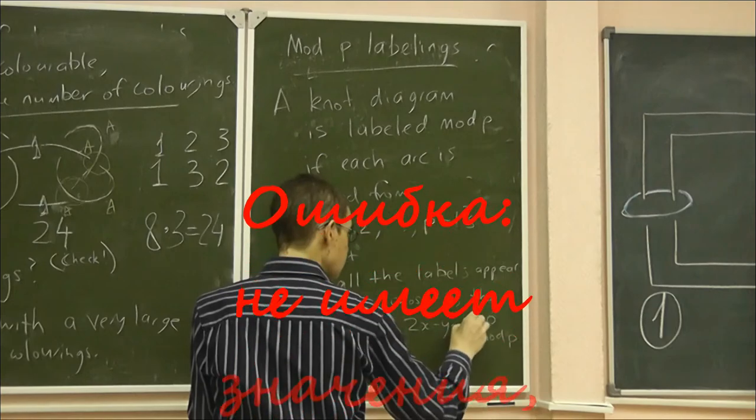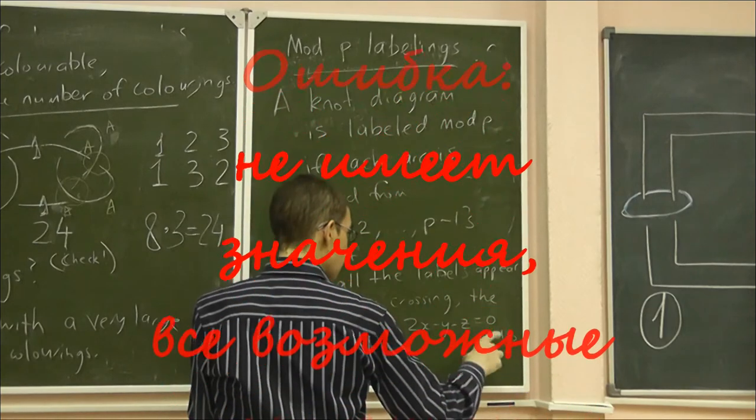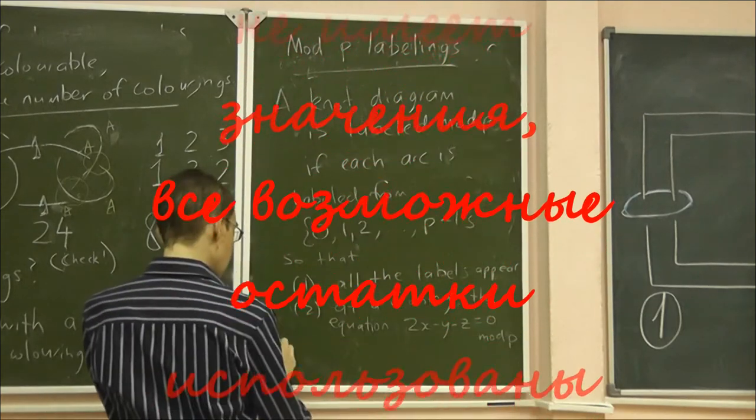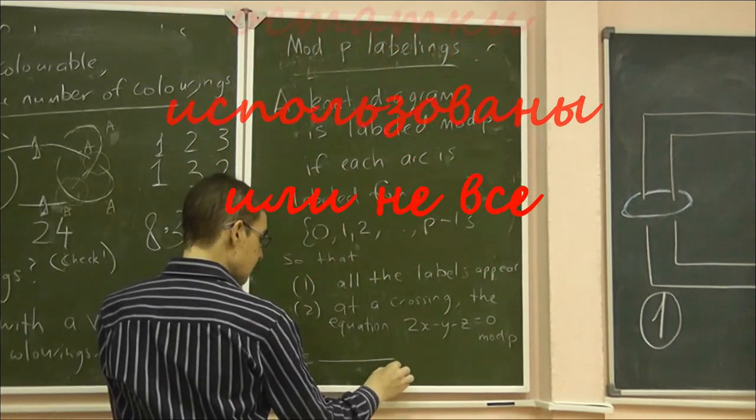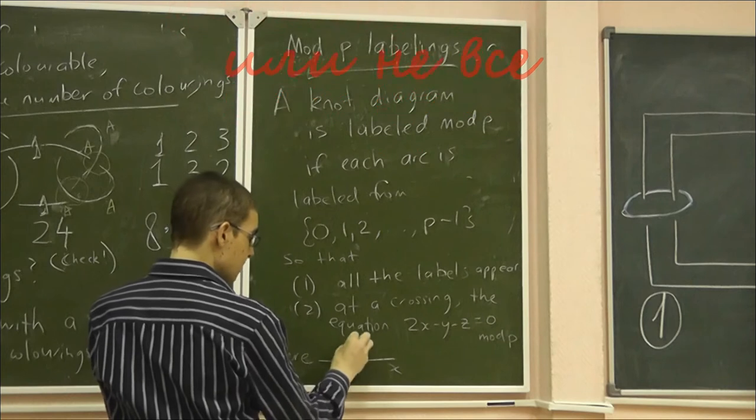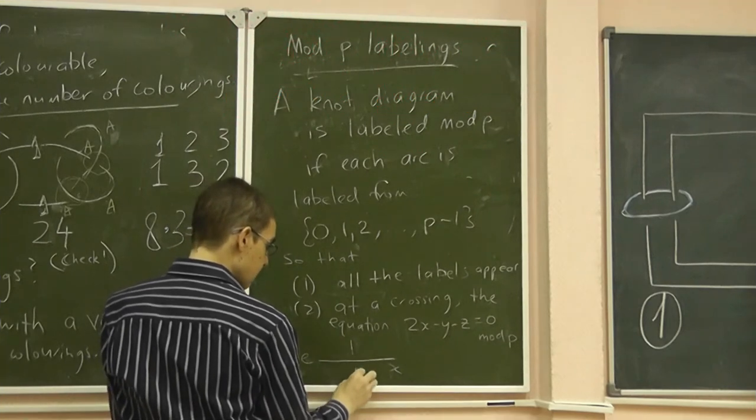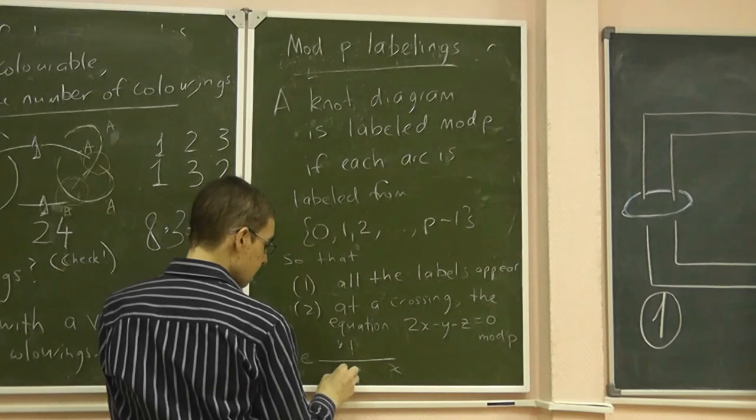The following equation holds: 2x minus y minus z equals 0 mod p, where the over strand is the one labeled x and the other two strands are labeled y and z.